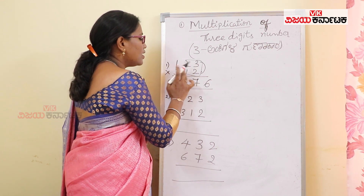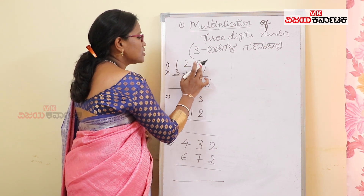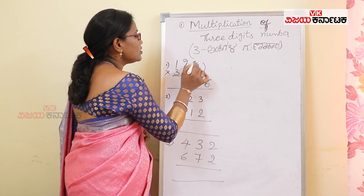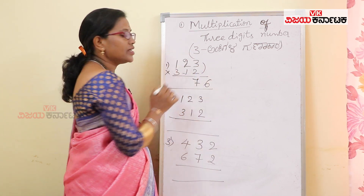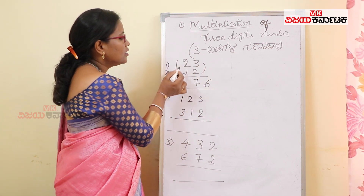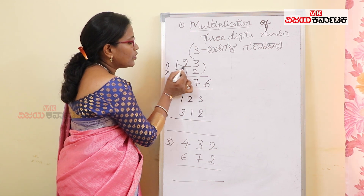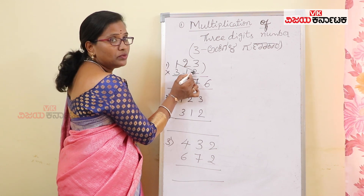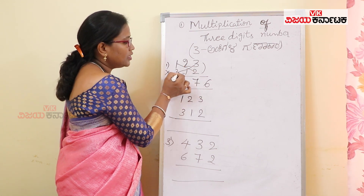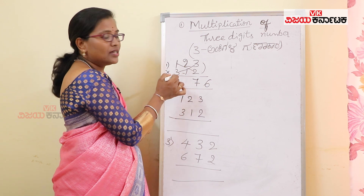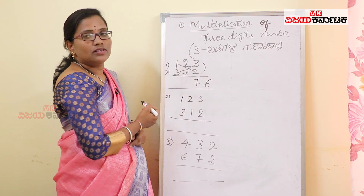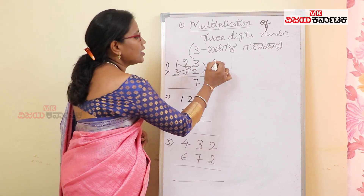If you consider all 6 digits, we will cross-multiply: 1 into 2, plus 3 into 3, plus 2 into 1. It forms a star pattern — here, here, here, here.